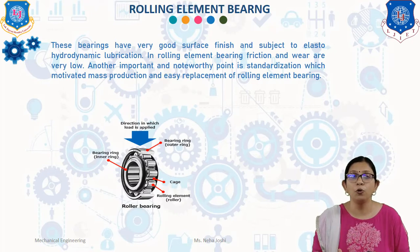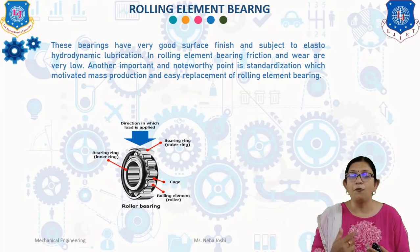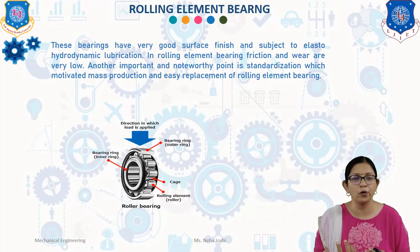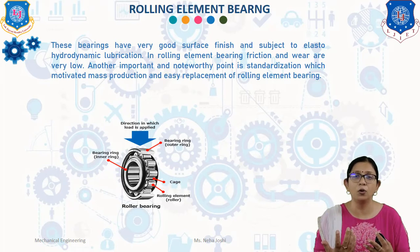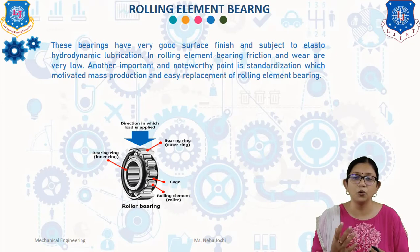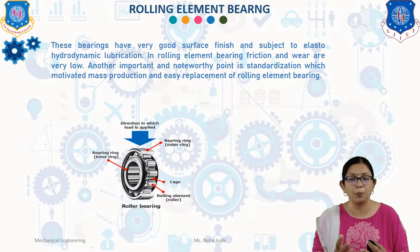There are generally four components, as you can see in the diagram for the rolling element bearing. First one is inner ring. Second one is rolling element like balls or rollers. Third one is cage for holding the rollers, and the outer ring as we can see in the diagram. A cage is used to separate the rolling elements. In the absence of a cage, the rolling elements would collide with each other and reduce the rolling velocity, so the cage is very important.